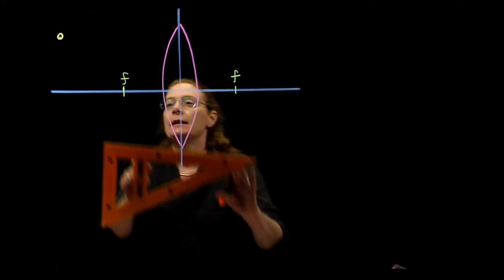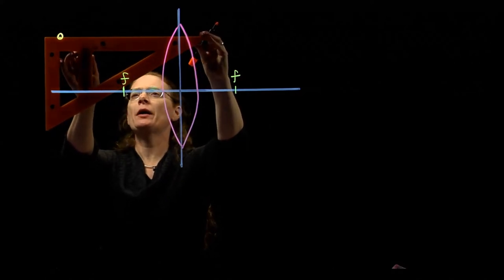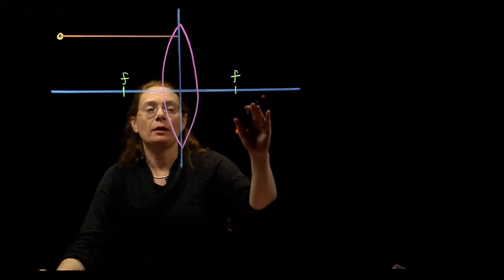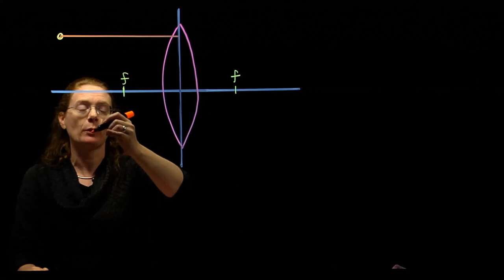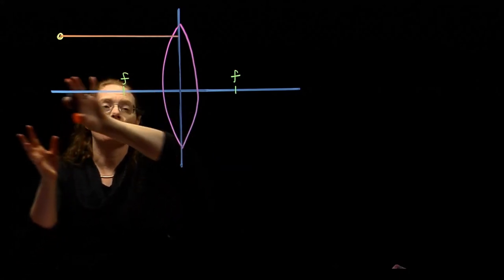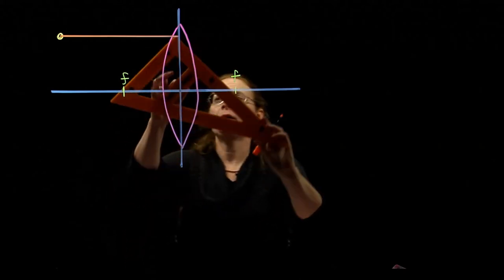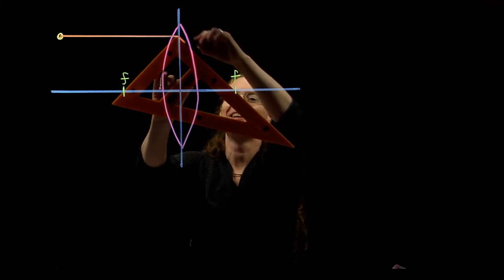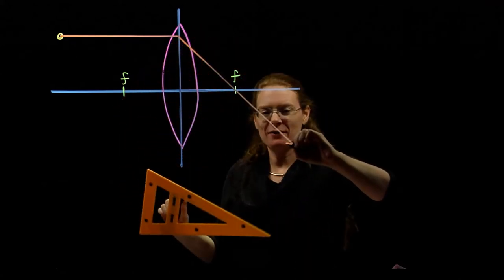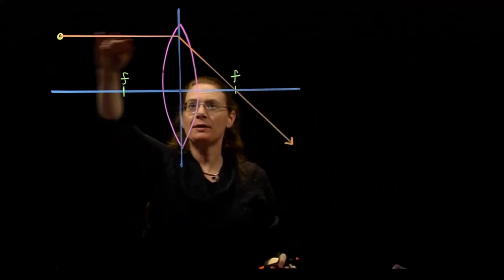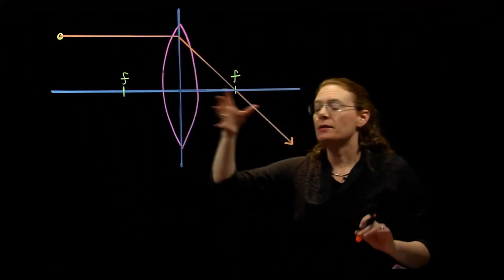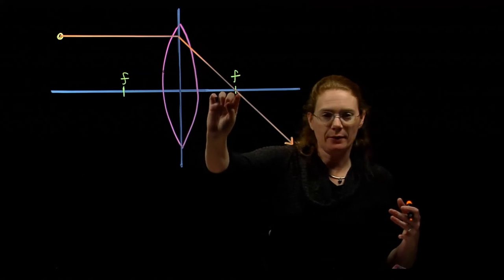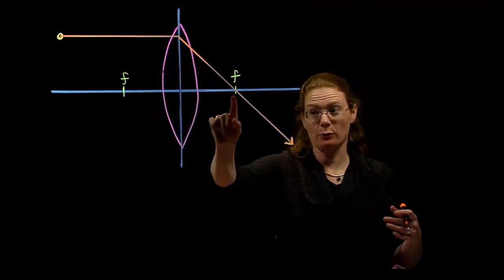If you remember, we have a light ray that goes out parallel to the axis, and then with a mirror, it bounced back and went through the focal. But this is a lens, so the light's going through. This one is going to go through the far focal. So there's a light ray that comes in parallel to the axis and goes through the far focal. This is one of the definitions of a focal point. Parallel light coming in all gets focused down to this point.